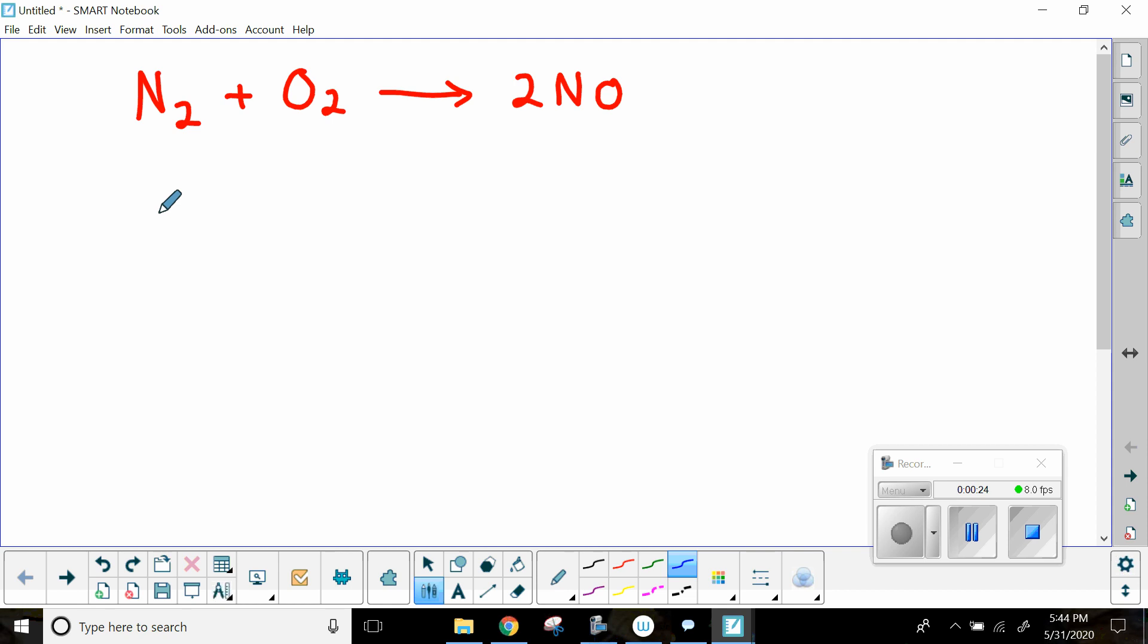What happens when you have internal combustion engines, such as in a car or jet engine, is that nitrogen and oxygen gas combine to make nitrous oxide. That nitrous oxide can do a variety of different things that are pretty damaging.